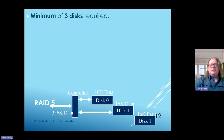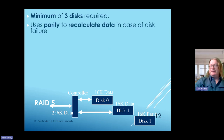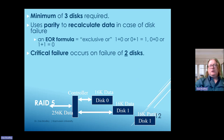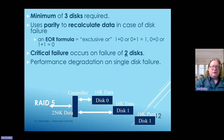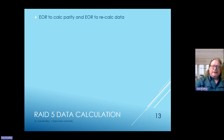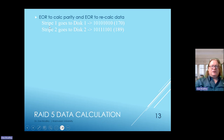With RAID 5, a minimum of three disks are required. It uses parity to recalculate the data in case of a disk failure and involves the use of an XOR formula: 1 XOR 0 or 0 XOR 1 equals 1, while 0 XOR 0 or 1 XOR 1 equals 0. Critical failure occurs when two disks fail. Performance degradation on a single disk failure is expected, and it uses a smaller stripe size to aid the parity calculation.